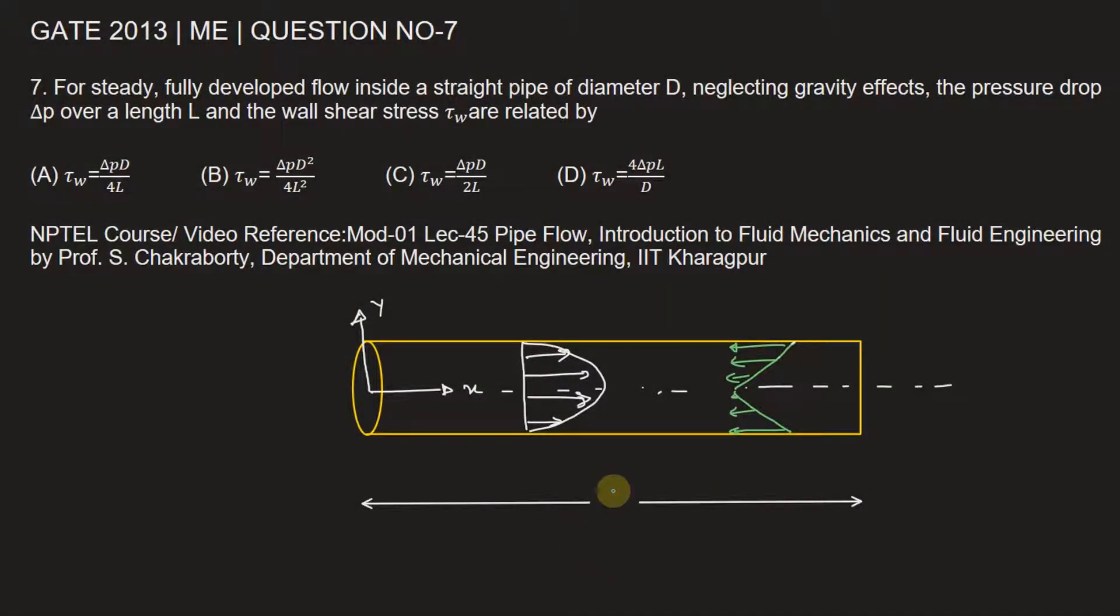Now suppose this is a pipe of length L in steady fully developed region and this is the velocity profile in radial direction and this is the shear stress profile in radial direction along the length of this pipe. For a pipe flow we know that the wall shear stress